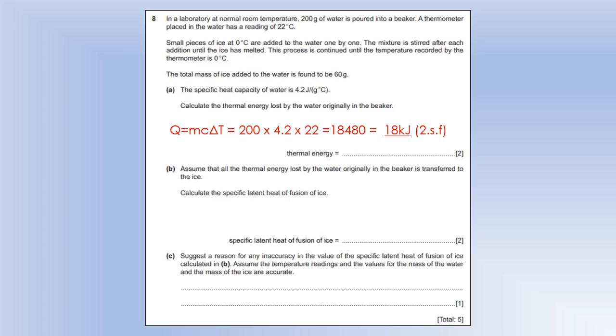So assume that all the thermal energy lost by the water is transferred to the ice. Calculate the latent heat of fusion of ice. Well, the equation we're going to use is Q equals ML. Let's rearrange that to make L the subject. We know the energy. We know the mass of ice. So we get our latent heat of fusion. And that mass is in grams. So that's going to be in joules per gram.